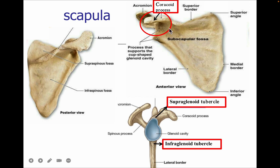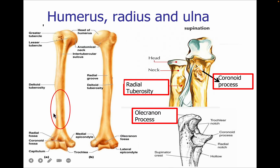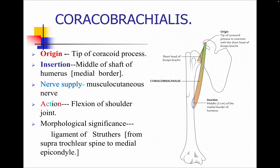On the scapula, we have the coracoid process and the glenoid cavity. Above the glenoid cavity is the supraglenoid tubercle, and below is the infraglenoid tubercle. Then we have the humerus bone — keep in mind the lower anterior part. We also have the radius bone and the ulna bone. On the radius is the radial tuberosity, and on the ulna we have the coronoid process and the ulna tuberosity. These landmarks help us understand the origin and insertion of muscles.